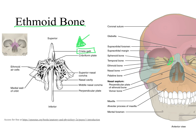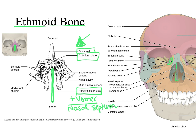In this zoomed-in image we can identify the crista galli and the cribriform plate of the ethmoid bone. We also see a structure that goes down inferiorly, dividing our nasal cavity — this is called the perpendicular plate of the ethmoid bone. The perpendicular plate of the ethmoid bone plus the vomer bone, which is one of the facial bones, together form the nasal septum.